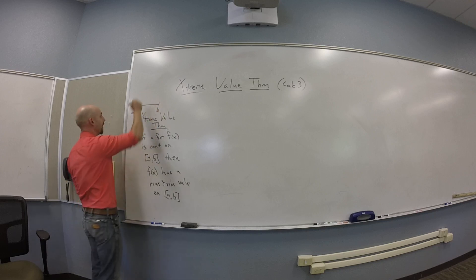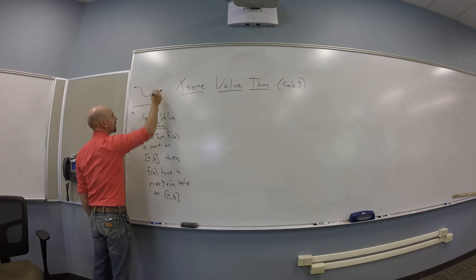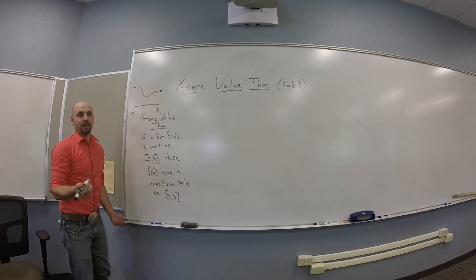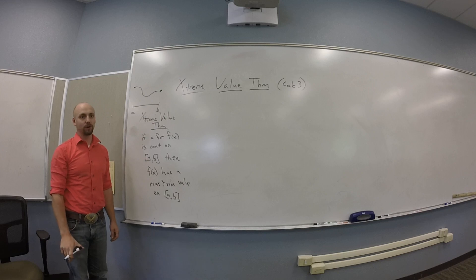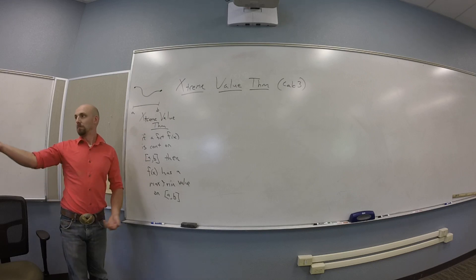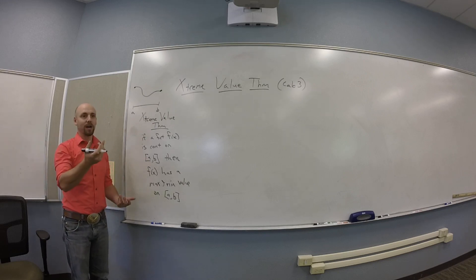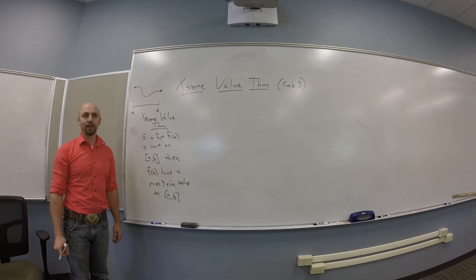Like if you have here from a to b, and you have some kind of a function that does something like this, right? It's not a line or a plane, it's just some continuous function. Somewhere is a high spot, somewhere is a low spot. Someplace in there, there's going to be a highest spot. Someplace in there, there's going to be a lowest spot.